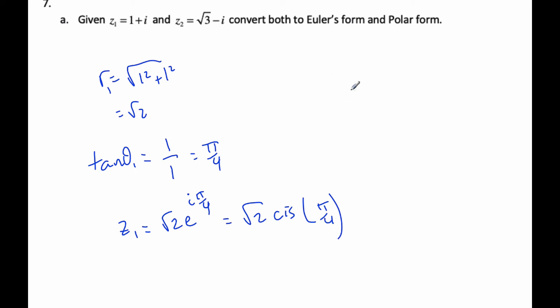Similarly, if I do it with z2, my r2 is going to be the square root of root 3 squared plus negative 1 squared, which is 3 plus 1 is 4, square root of 4 is 2.